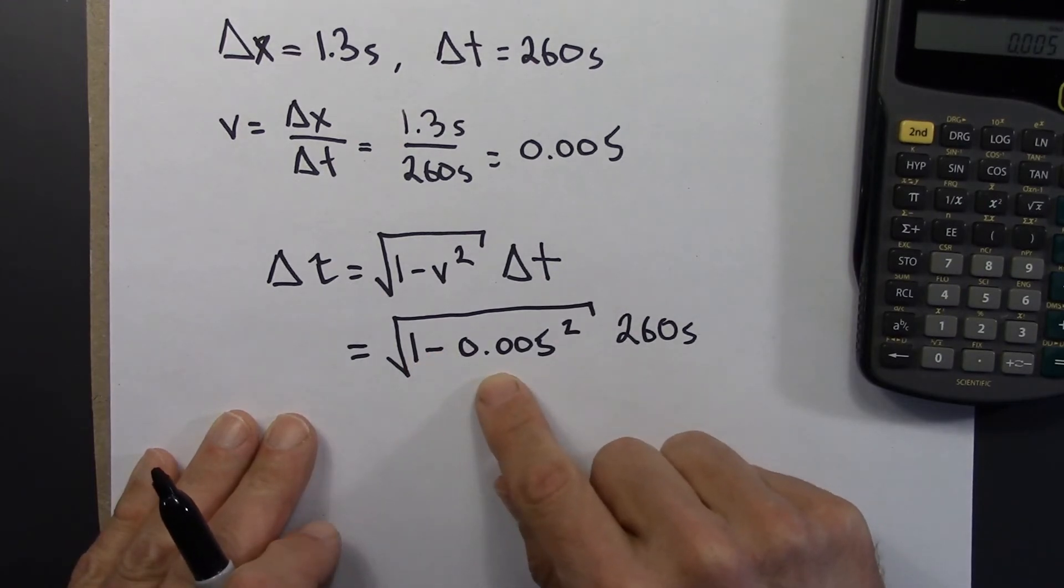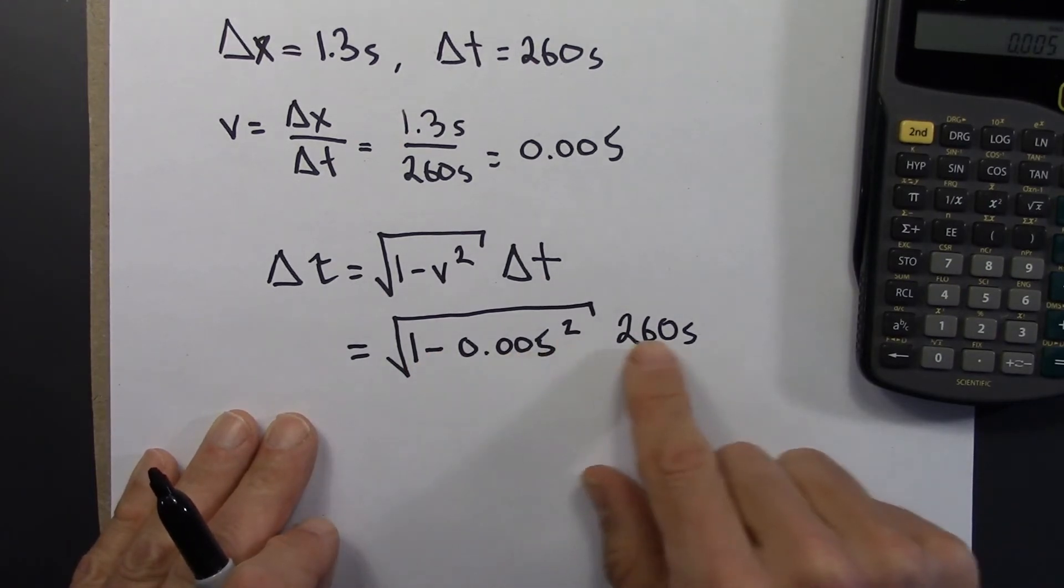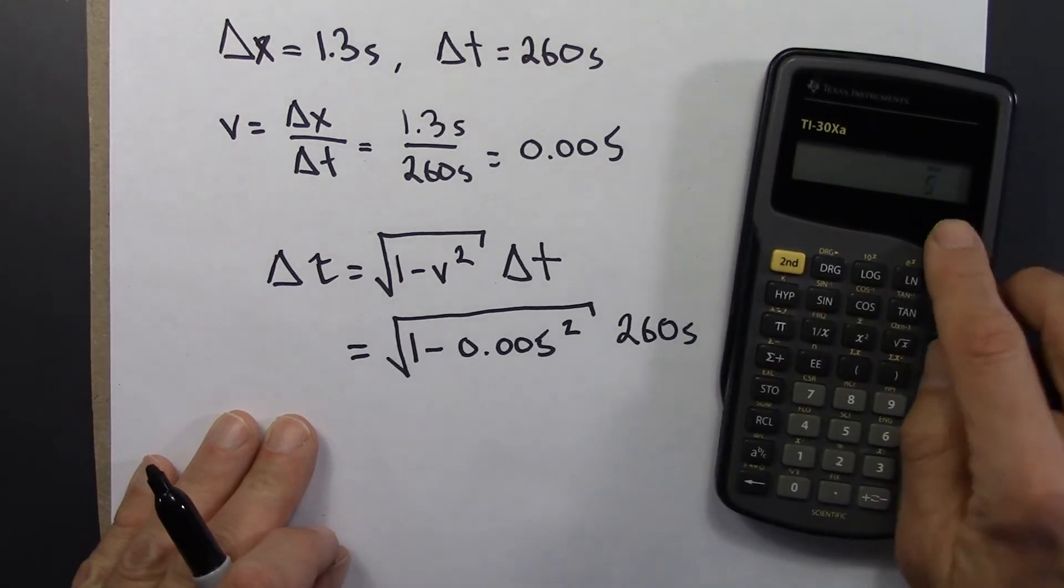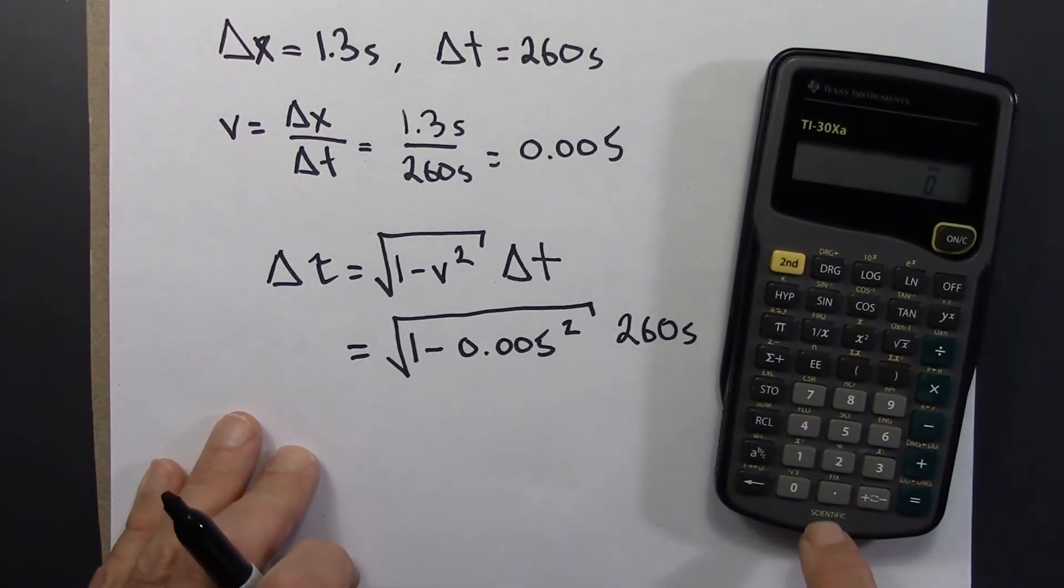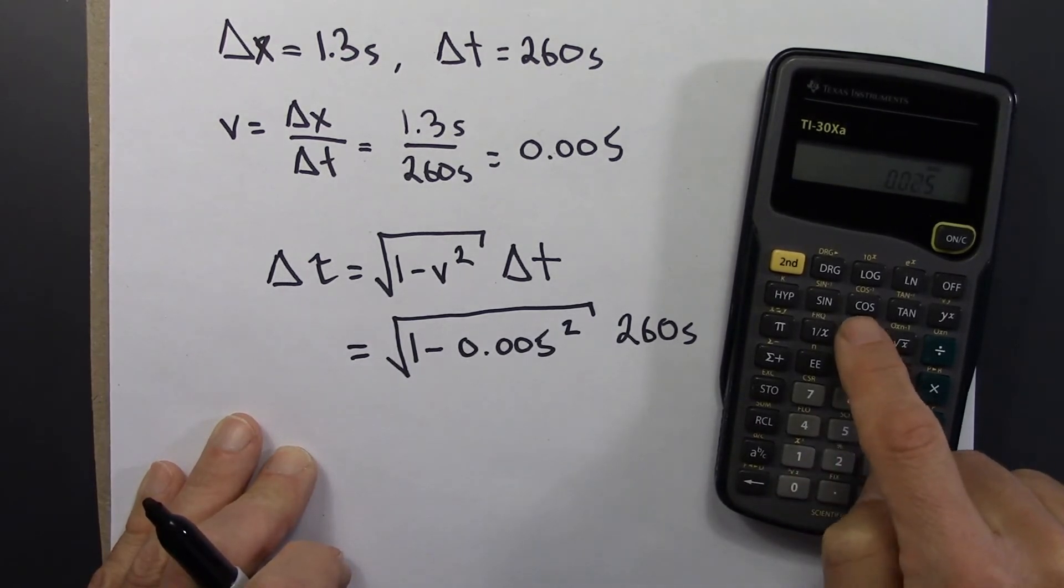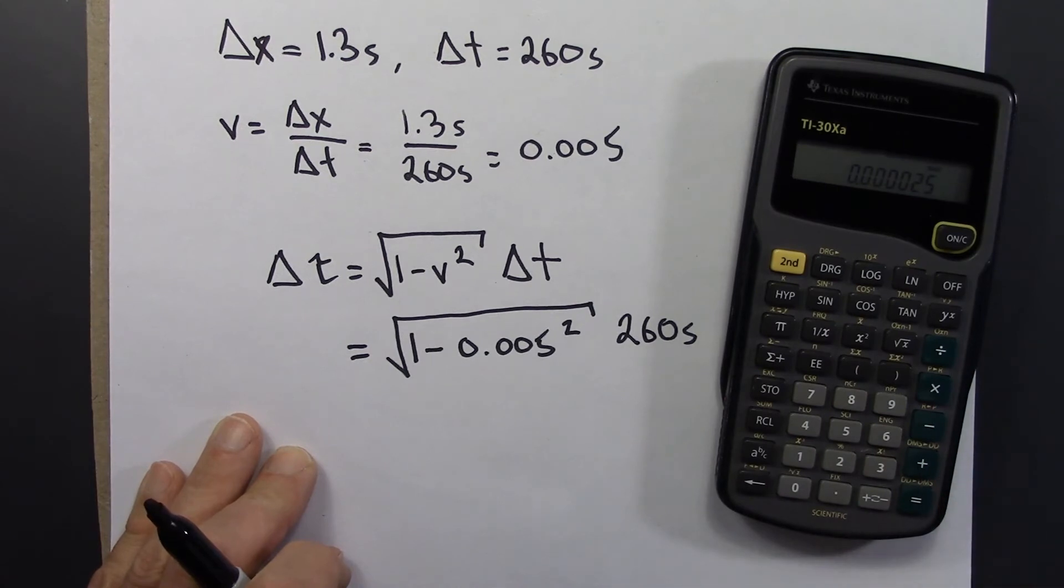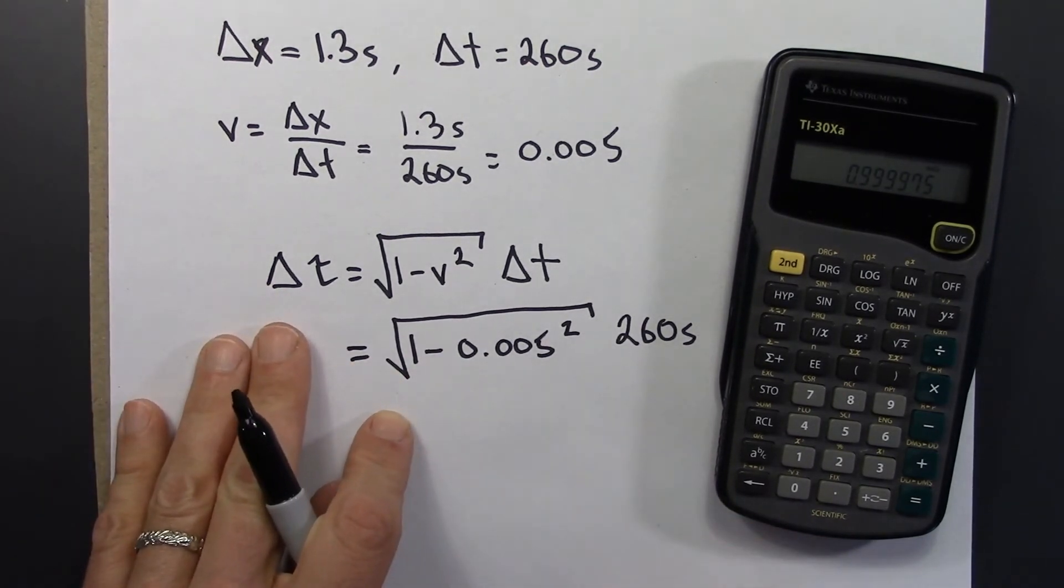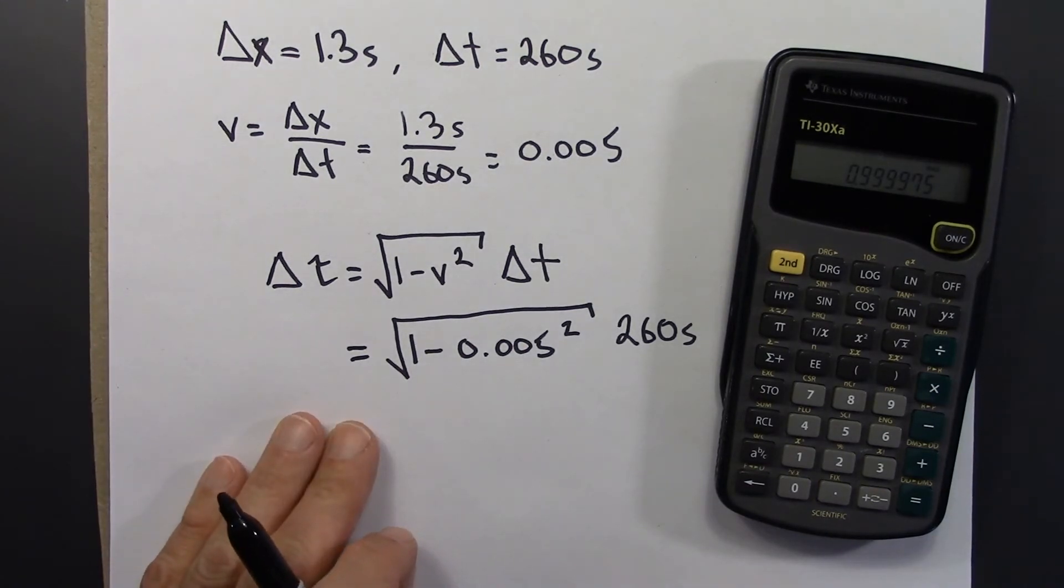0.999 something. Square root that, and then multiply by 260. So that's something my calculator can kind of barely handle. So let's see, I'll do it this way. 1 minus 0.005 squared. That's 0.000025. So 1 minus this thing squared is 0.999975. That's really close to 1.